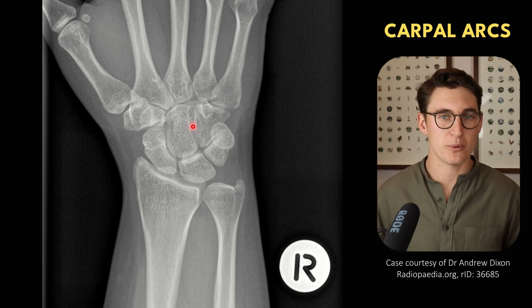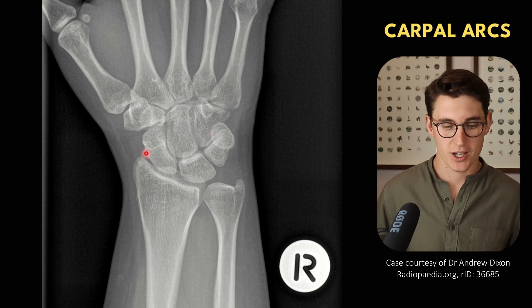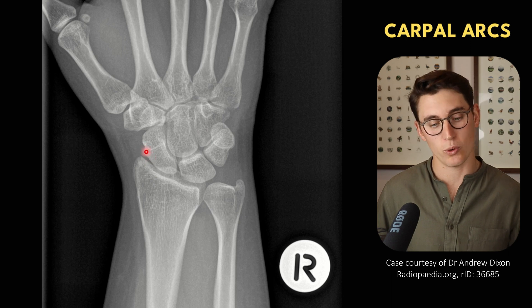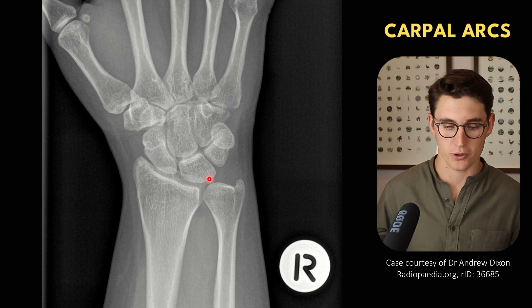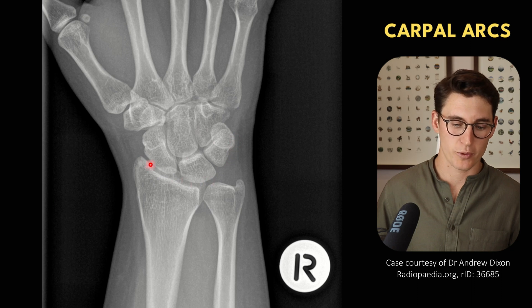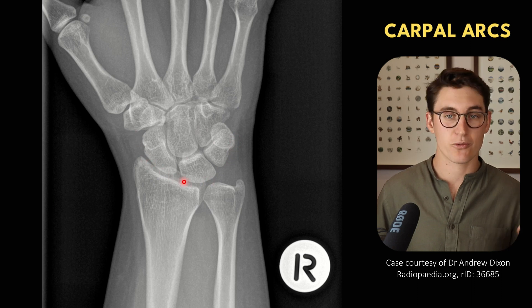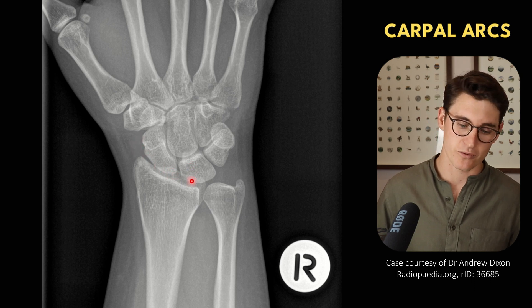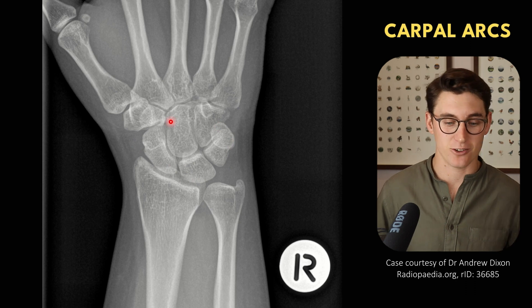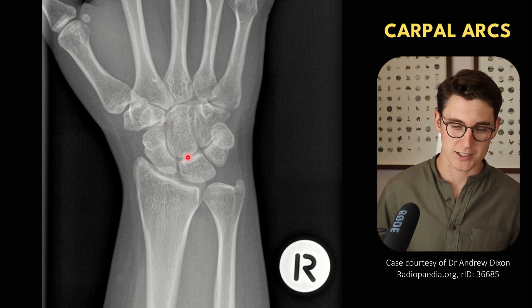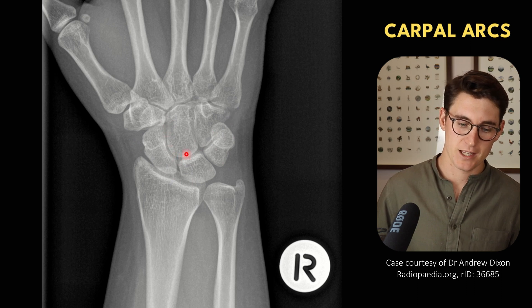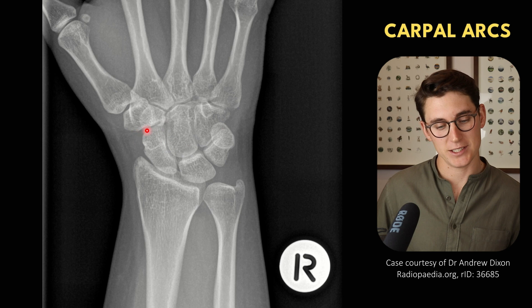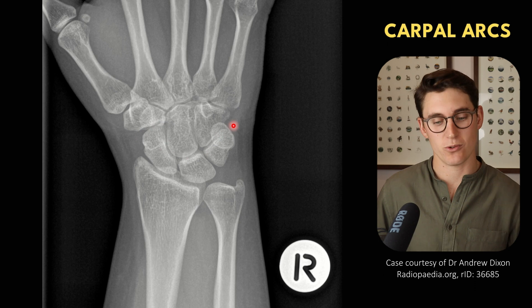We can then look at what's known as the carpal arcs of the wrist. We have a carpal arc coming along the proximal border of our proximal carpal bones — we should see a smooth arc forming all the way around. If there are fractures or dislocations, we could have disruption, step-up, or step-down deformities of this carpal arc. We can also look at the distal row with a nice smooth arc between the capitate and the hamate, and some people also continue the arc between the trapezium and trapezoid bones.